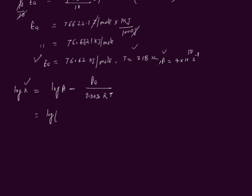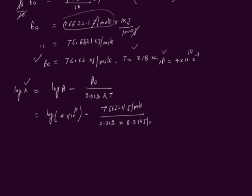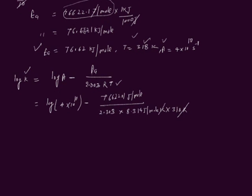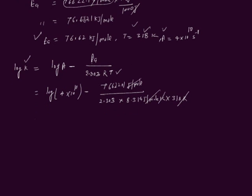Log A is log of 4 multiplied by 10 to the power 10. We use Ea in joules per mole since R is also in joules per mole K, so units cancel. Ea equals 76622.1 joules per mole, divided by 2.303 multiplied by 8.314 joules per mole K, multiplied by 318 K. Kelvin and joules per mole cancel out. Let us simplify the expression.